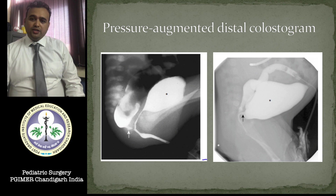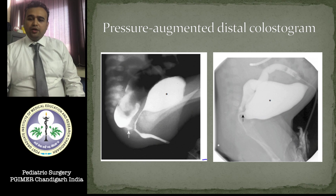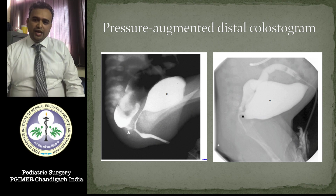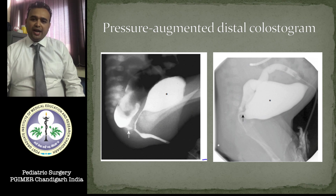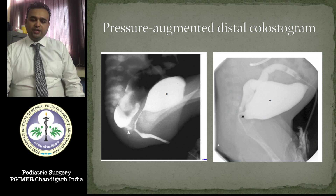Once SDSC is done, we prefer pressure-augmented distal colostogram after 6 weeks. The colostogram gives us an idea about the rectal pouch, and when dye is instilled with pressure into the distal mucous fistula, we can see the fistula and its exact level. In this X-ray it is showing a bulbar fistula.